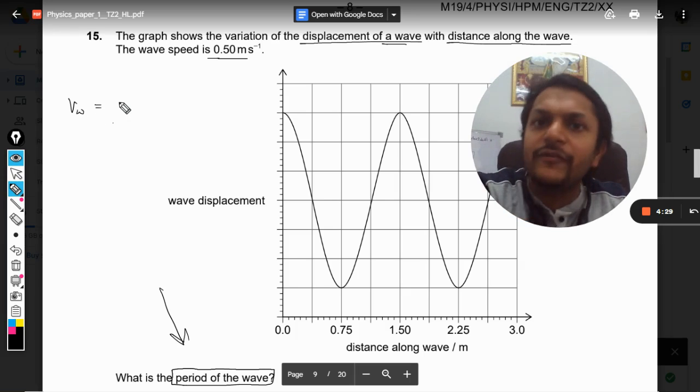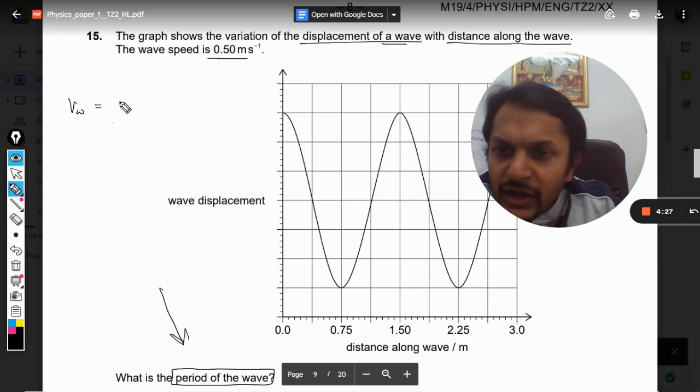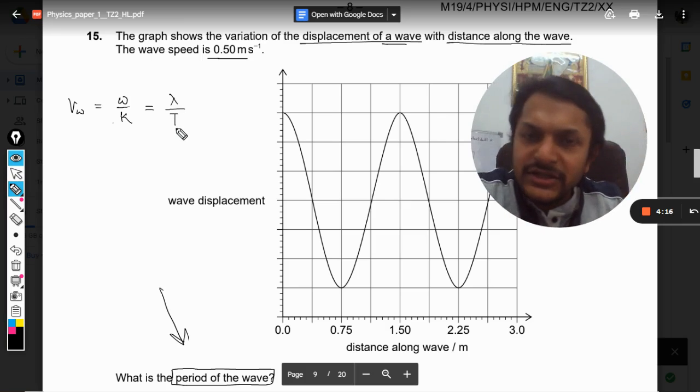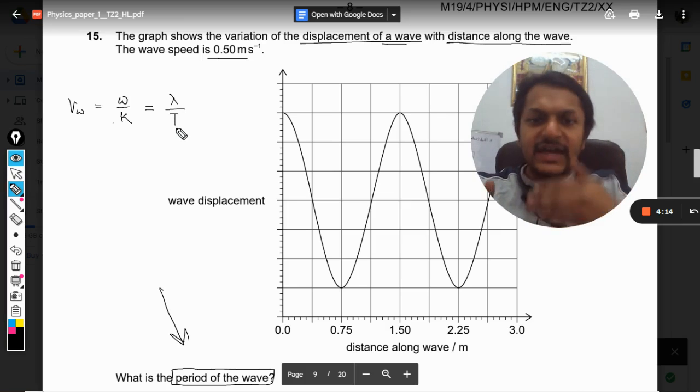What is the formula for the velocity of wave? Velocity of wave is omega by k, or you can call it lambda by T, wavelength divided by the time period.